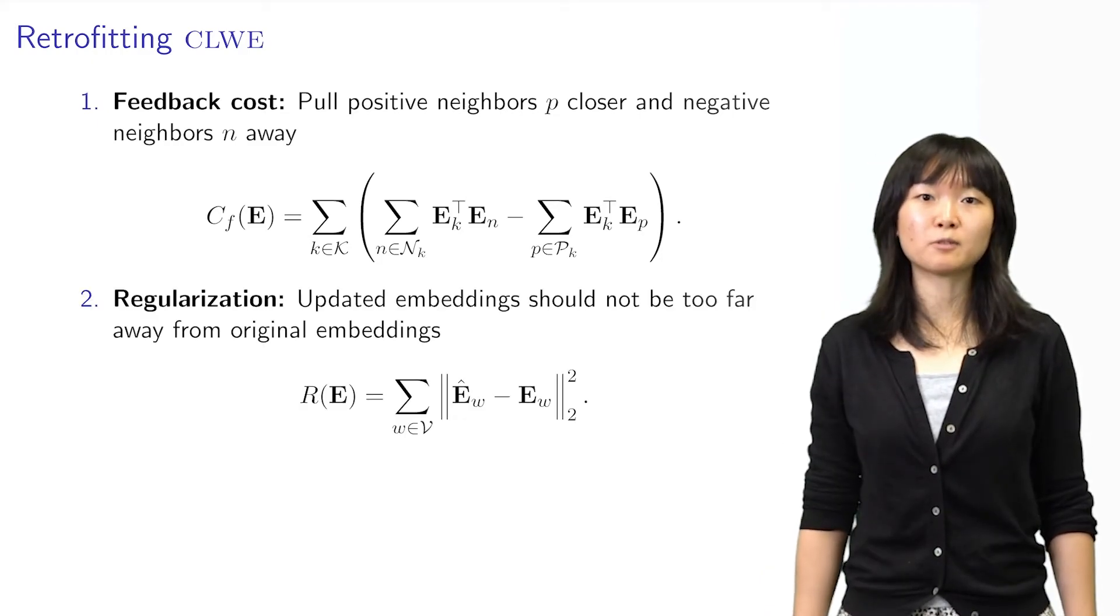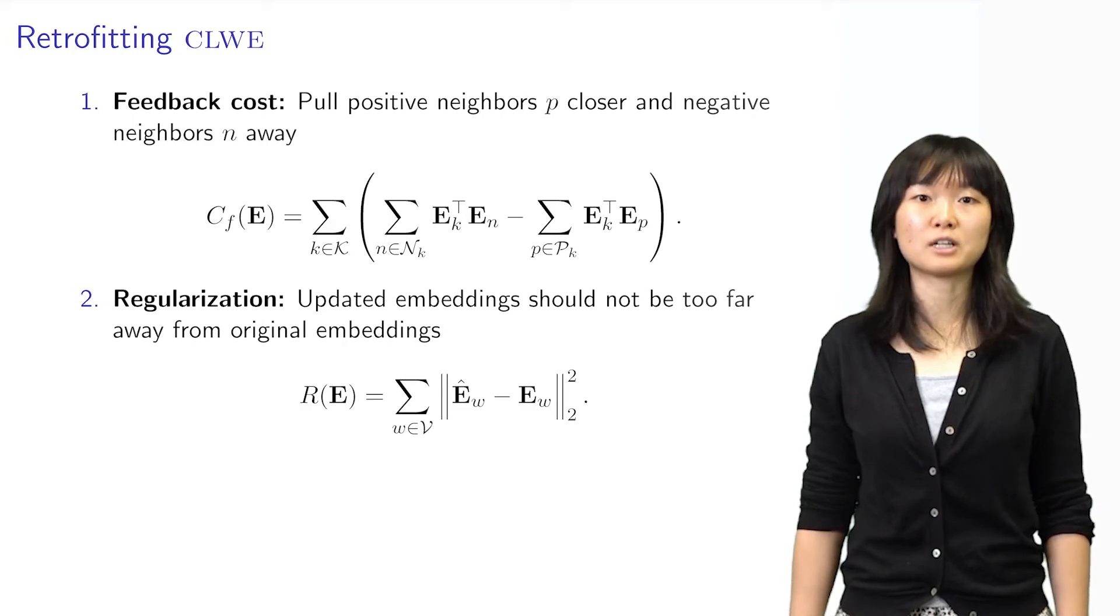Next, we add a regularization term that prevents the embeddings from drifting away from their original positions. The original embeddings contain important semantic information accumulated during pre-training. We do not want to discard this information, so we use this regularization term.